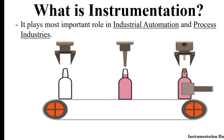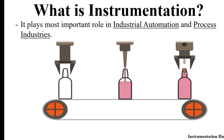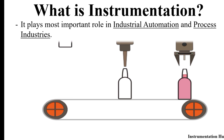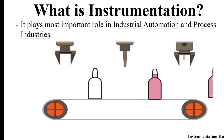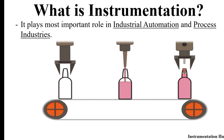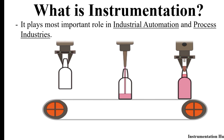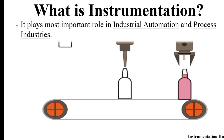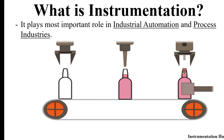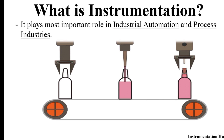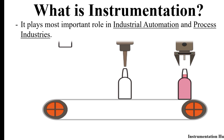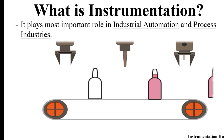The second example is an automatic bottle filling application. There is no operator — it is a fully automatic system — and it also requires the same components as the previous system. In short, instrumentation plays a major role in industrial applications.